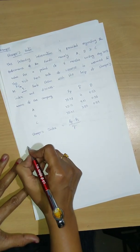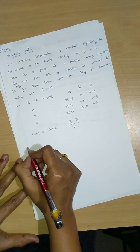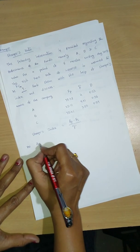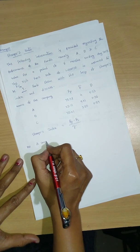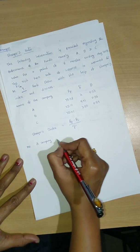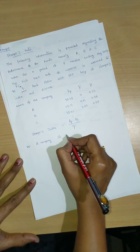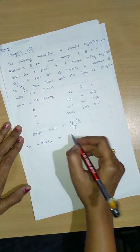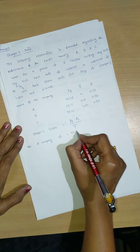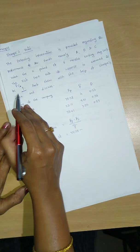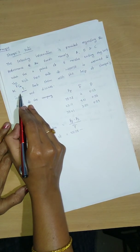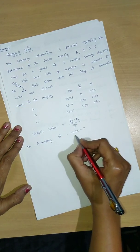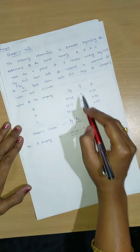So here for Company A, Sharpe's index equals RP. So what is Company A's RP? 25.38 minus RF. Here in the problem what is the RF? 9, divided by sigma P. Sigma P is nothing but standard deviation. Standard deviation for Company A is 4.